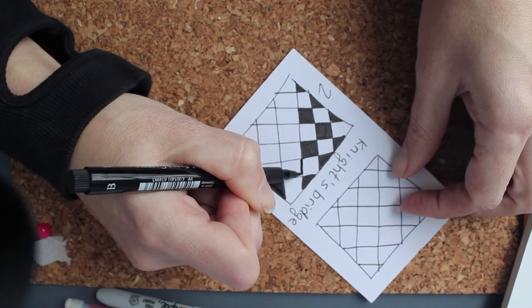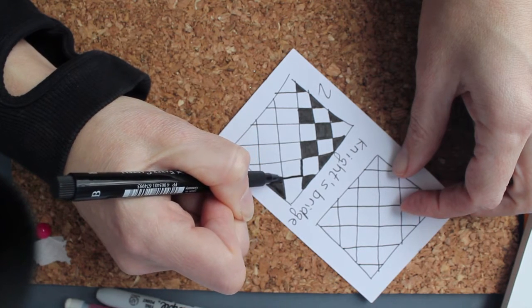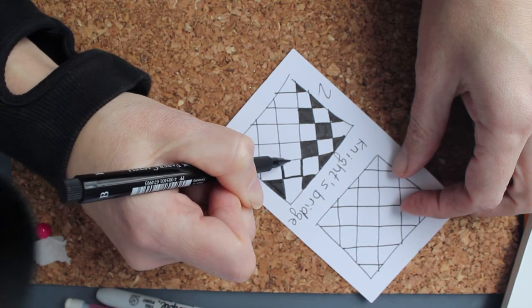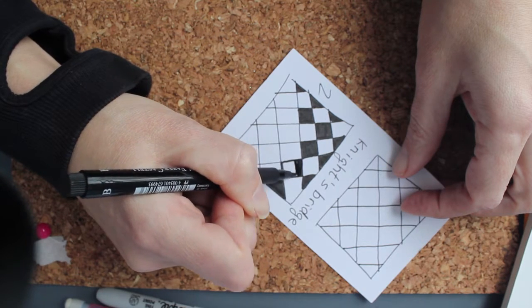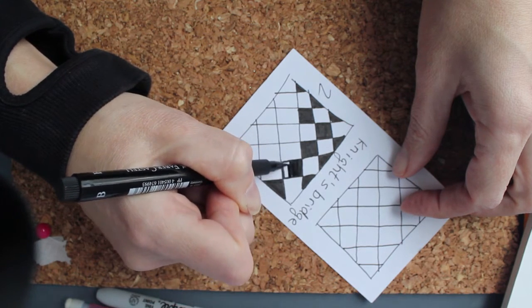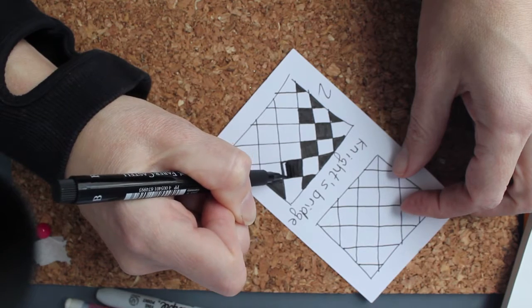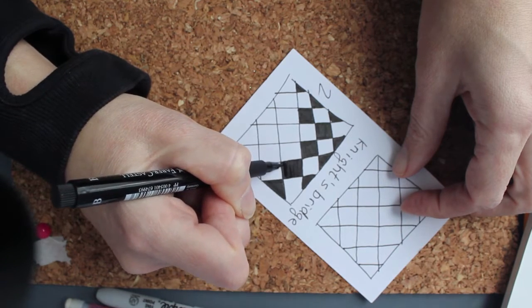As you can see, I like to outline the square first and then color it in. With the black marker, you don't really notice a difference, but I do that so I stay within the lines.